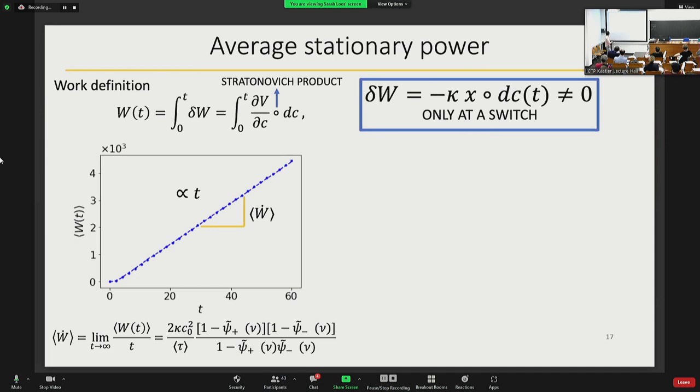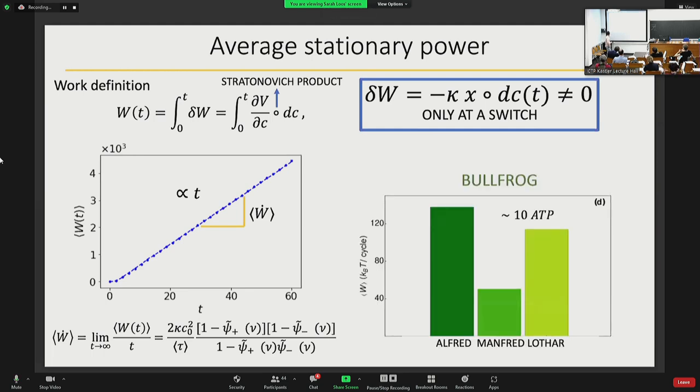We can extract the average stationary power. Once again this depends only on the Laplace transform of the waiting time distribution calculated at some typical time scales and also with respect to the average period of oscillation. Finally, we use our inferred parameters from the trajectory to calculate the average dissipated power per cycle. We find that the average energy dissipated per cycle is of the order of 10 ATP, which is something that we expect from experiments and also we have some bounds which were calculated at the level of the microscopic model for the system.